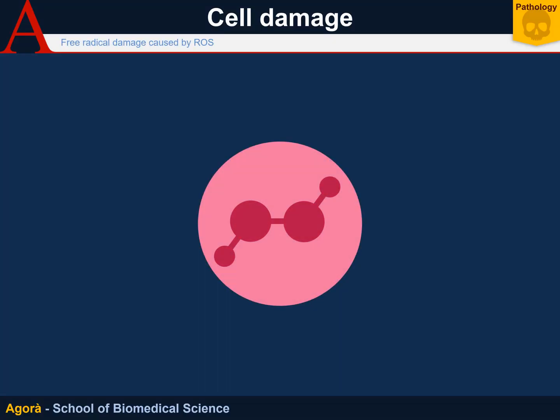In this video, we're going to finish our lesson on cell damage by talking about free radical damage. Free radical damage is caused by radicals of oxygen and other chemicals, among which nitrogen.